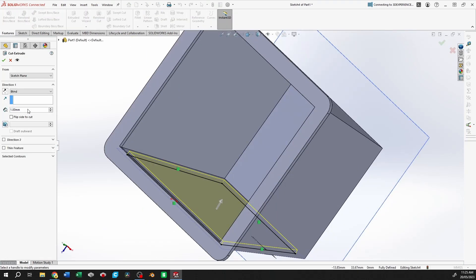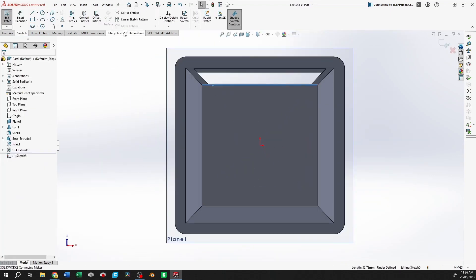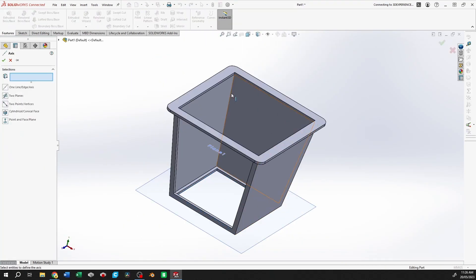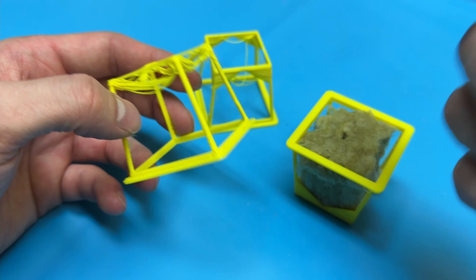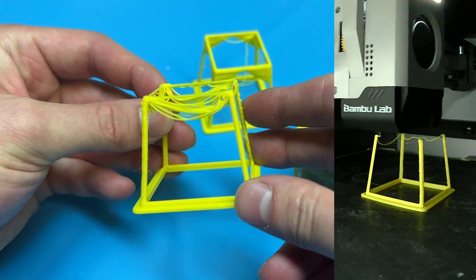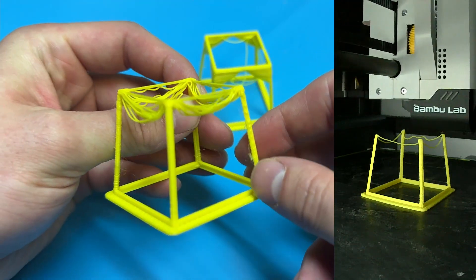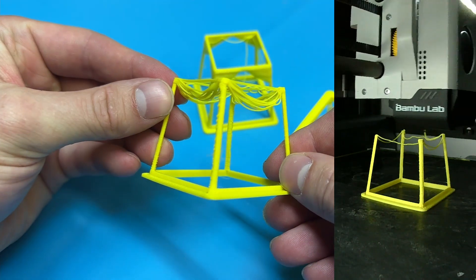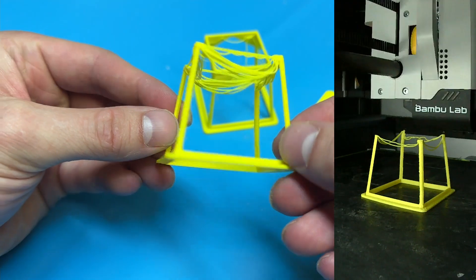And followed that up by cutting the holes out of the sides and the bottom, and then I sent it over to Bamboo Studio to slice it and then I printed it. And you can see that the results were a bunch of drooping bridges that just don't look good and aren't functional.